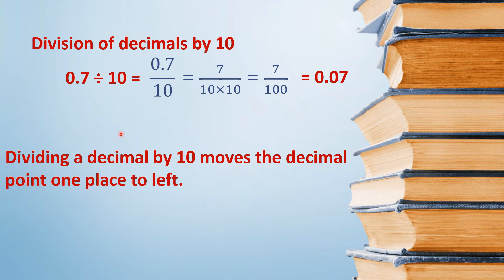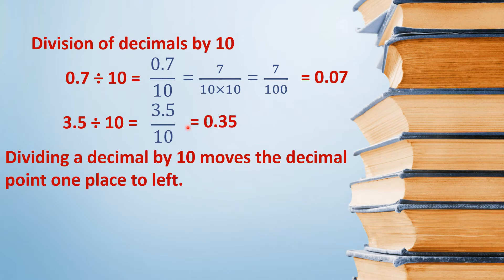So we can use this property directly. If we have to divide 3.5 by 10, then because it is divided by 10, the decimal will shift one place to the left, and it will become 0.35.